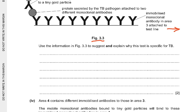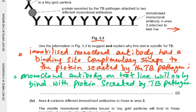The TB protein is specific to the TB pathogen, so the test won't react with any other protein produced by other pathogens — whether the person suffers from another bacterial disease or a viral disease. This is why the test is specific for TB: monoclonal antibodies with tiny gold particles are only held in place if the TB-specific protein is present in the saliva.